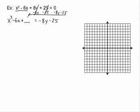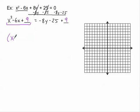Let's talk about completing the square. We did this plenty of times with circles. The number that will complete the square here is 9. We get the 9 by taking half of 6 and squaring it. Now if we're going to add 9 to one side of our equation, we must add 9 to the other side as well, because if we do something to one side, we have to do the same to the other side. We completed the square, making a perfect square trinomial that factors into x minus 3 quantity squared.